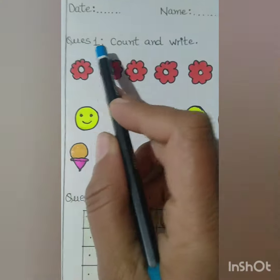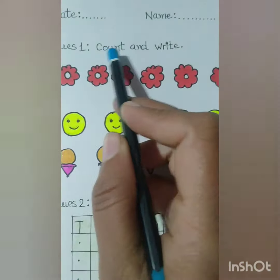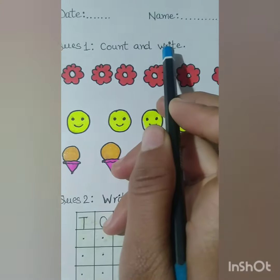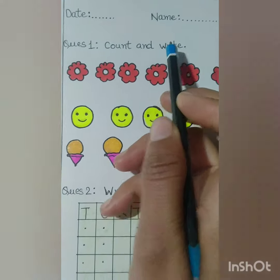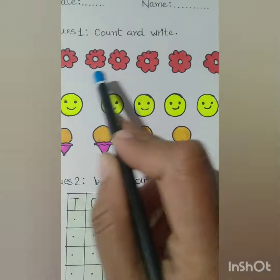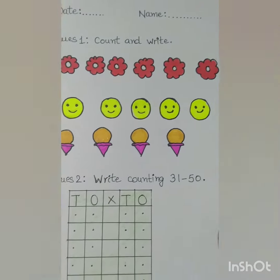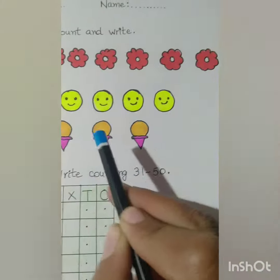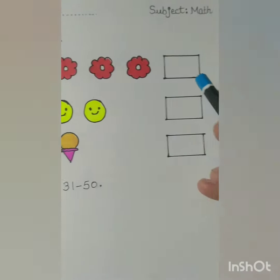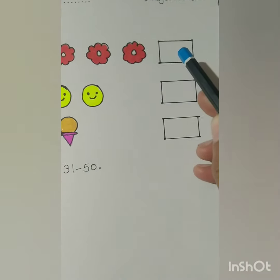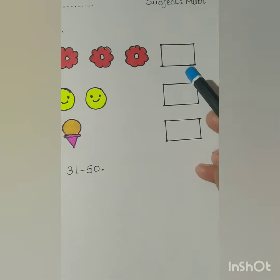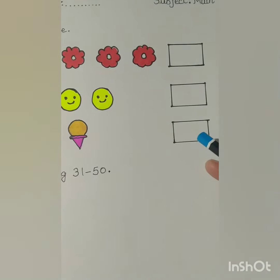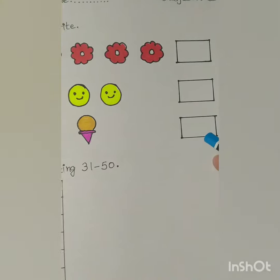Question number one: count and write. First, you will count the objects and then you will write the correct number in these boxes.